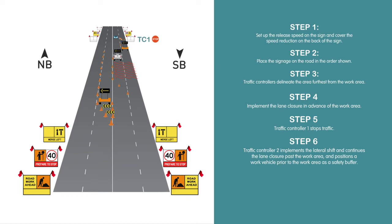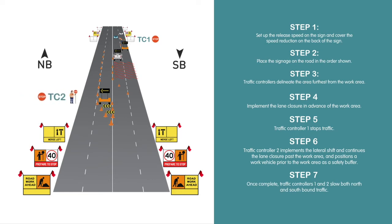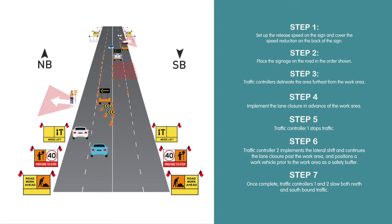Step 7: Once complete, traffic controllers 1 and 2 slow both north and southbound traffic. Don't forget your escape route and that it can change regularly.